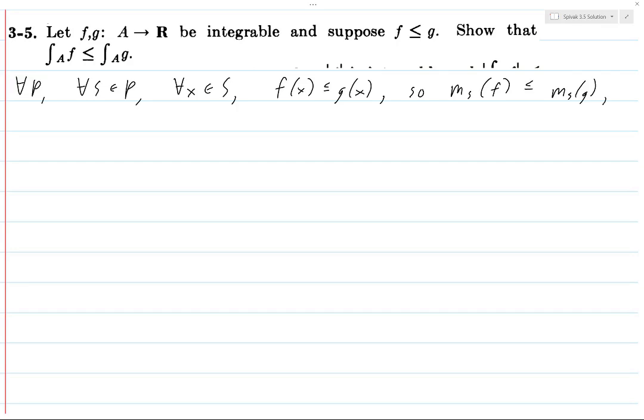And I guess that's really the key to this exercise, is that you can take infimums and supremums of an inequality and the inequality will still hold. So you start with F of X is less than or equal to G of X, taking infimum over all X in S on both sides, and you get m_S(F) is less than or equal to m_S(G).